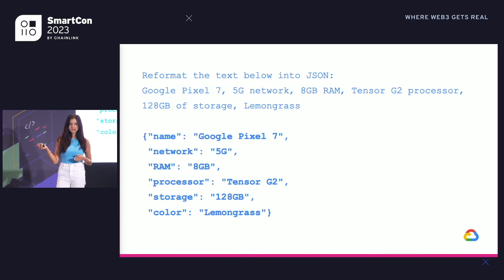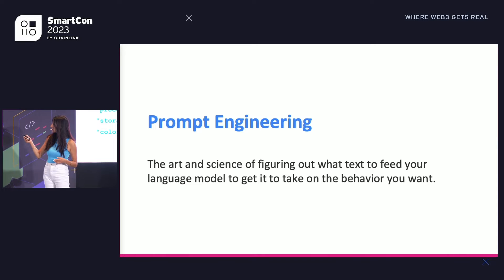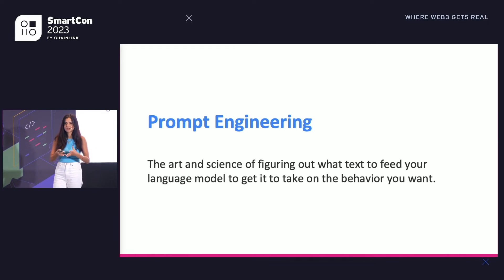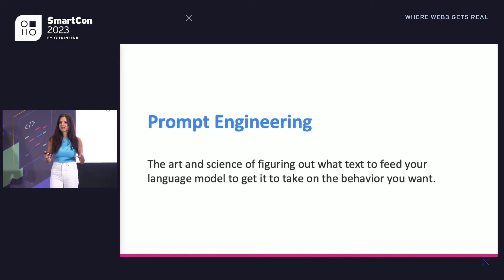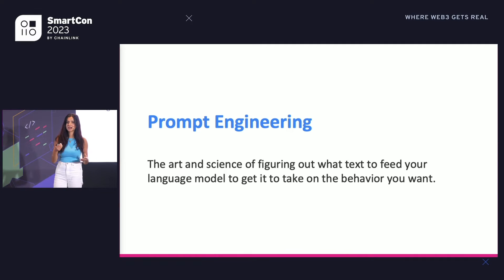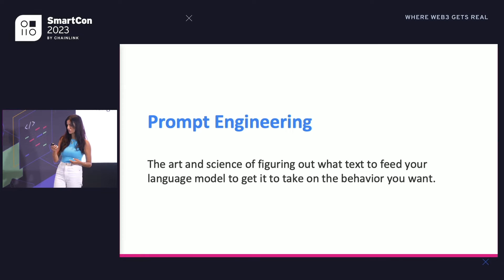At the end of the day, there is no single best way to write a prompt. Instead, there's a whole field — an art and science — of figuring out exactly what the best text is to get the large language model to take on the behavior that you want. That's known as prompt engineering.